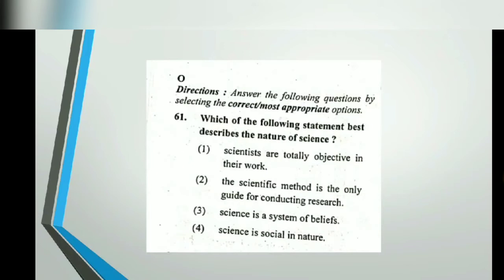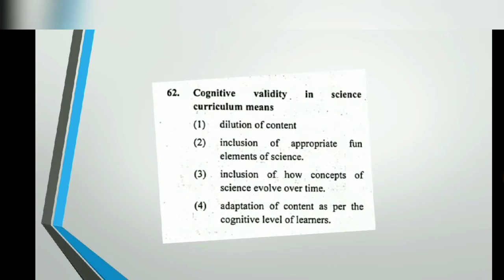The next question is about cognitive validity, which I shared with you previously. Cognitive validity in the science curriculum means that content should be aligned with the mental level of students and learners. So the correct answer here is the fourth option: adaptation of content as per the cognitive levels of learners. That was easy.